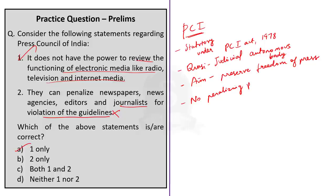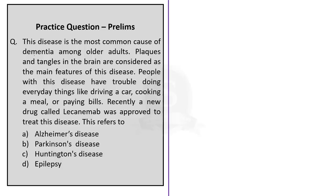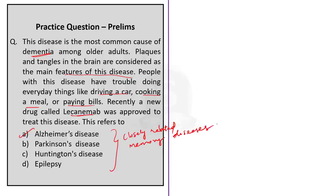Moving to the second question: this disease is the most common cause of dementia among older adults; plaques and tangles in the brain are considered its main feature; people with this disease have trouble doing everyday activities like driving a car, cooking a meal or paying bills; recently a new drug called lecanumab was approved to treat this disease. The answer is option A, Alzheimer's disease. Note that all the options given here are closely related and all affect the nervous system and the brain, but the clue is lecanumab, which is related only to Alzheimer's. Lecanumab is a type of monoclonal antibody used to treat persons affected by Alzheimer's.